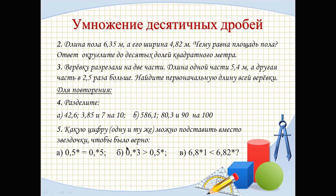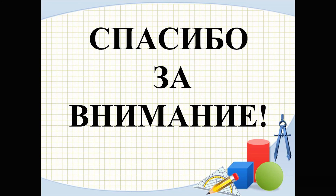Fifth task: what single digit can be substituted for the asterisk to make these true? 0.5★ = 0.05★; 0.03 is greater than 0.05★; and 0.800★1 is less than 6.820★ thousandths. Thank you for your attention. See you next time!